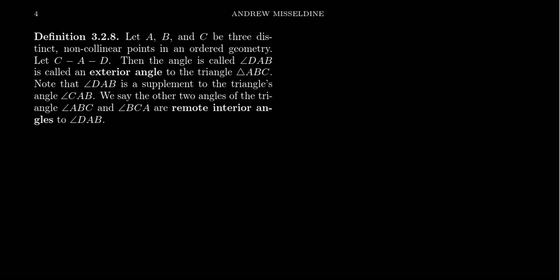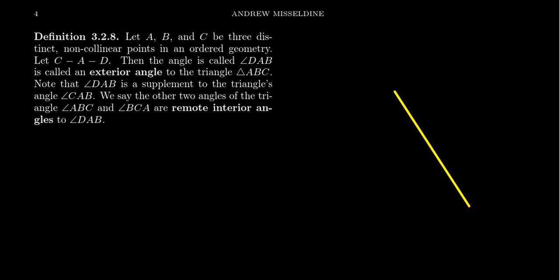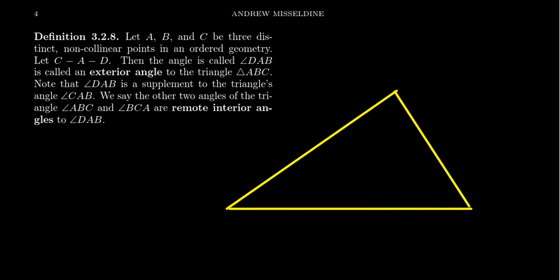In this video, we're going to state and prove the exterior angle theorem as a theorem of congruence geometries. First, let's make sure we understand the vocabulary: what's a remote interior angle, what's an exterior angle of a triangle, and such. Imagine we have three points A, B, and C — three distinct points which are not collinear. Therefore, they make a triangle, with angle A, angle B, and angle C.